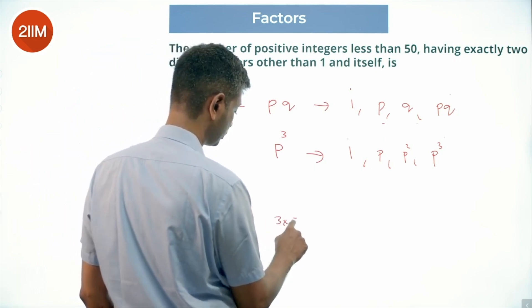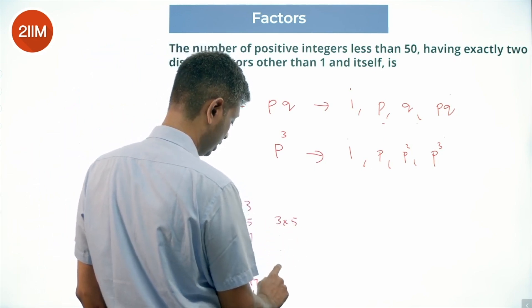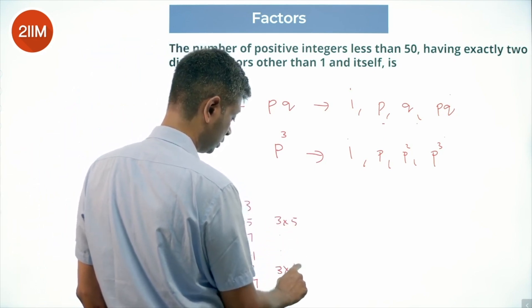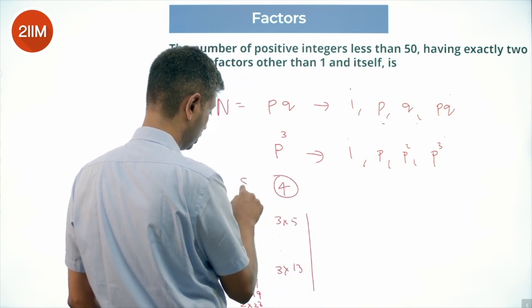We say 3×5, 3×7, 3×11, 3×13—another 4 numbers here. 8 numbers.